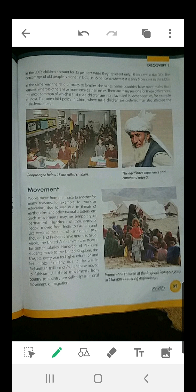People move from one place to another for many reasons — for example, for work or education, due to war, or due to threats of earthquakes and natural disasters. Such movements may be temporary or permanent. Hundreds of thousands of people moved from India to Pakistan and vice versa at the time of partition in 1947. People generally move from one place to another for a better life or due to natural disasters, such as earthquakes in Hawaii.